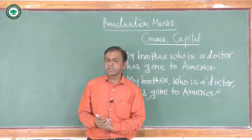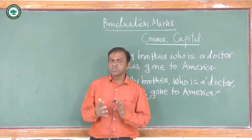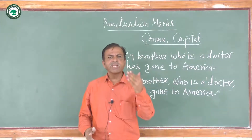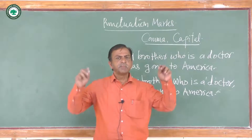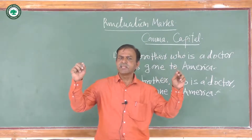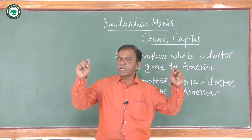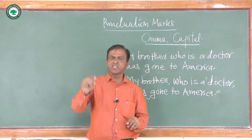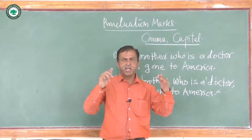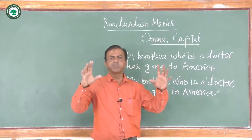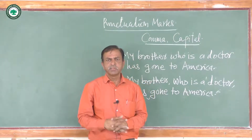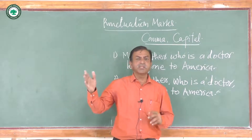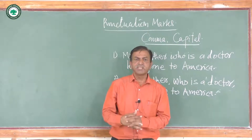The next use of capitalization is for the titles of literary works, or the title of a book. For example: 'Pride and Prejudice is written by Jane Austen.' Pride and Prejudice is the name of a novel, so 'P' in Pride and 'P' in Prejudice are both capital letters. Jane Austen is the name of the author, so the first letter should be written in capital.